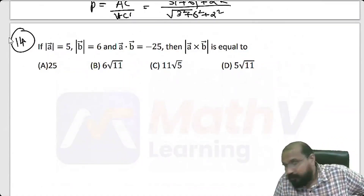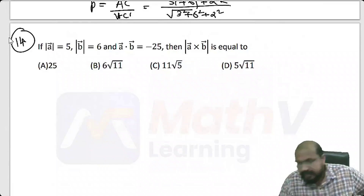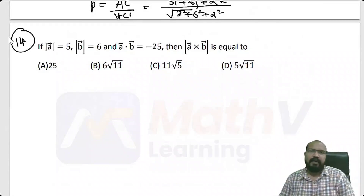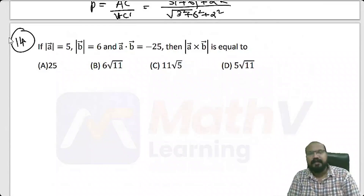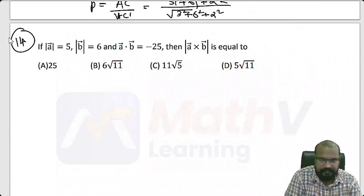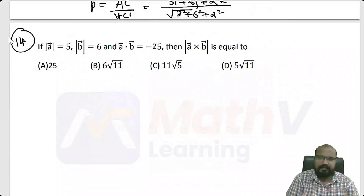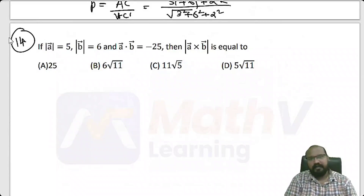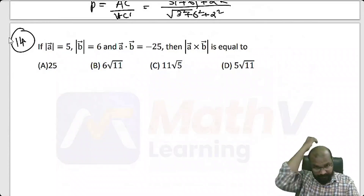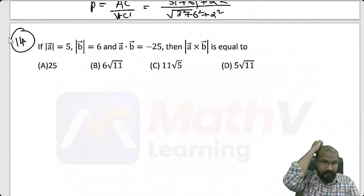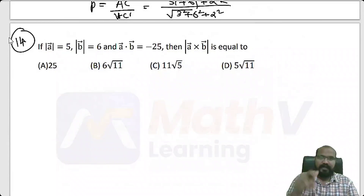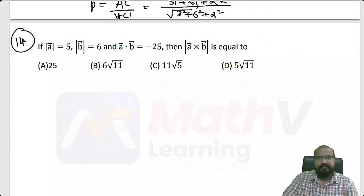Modulus of vector A is 5 and modulus of vector B is 6. Vector A dot B is minus 25. Which means A cross B is what we need to find.